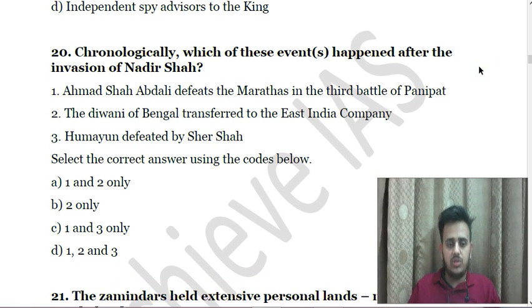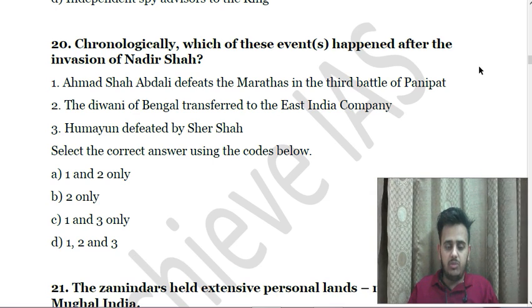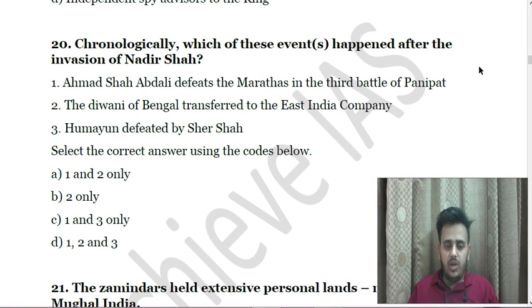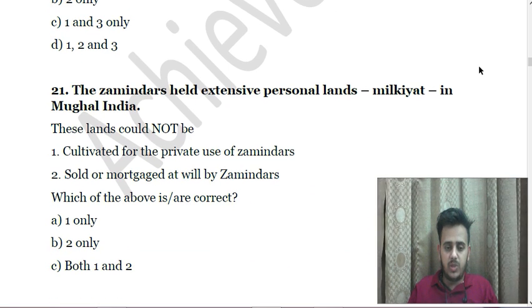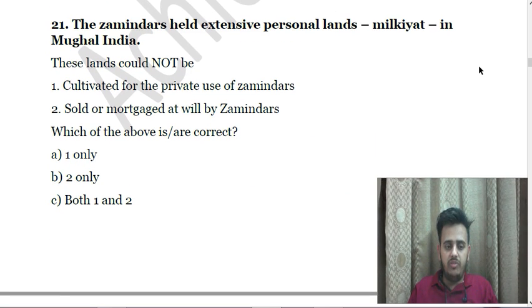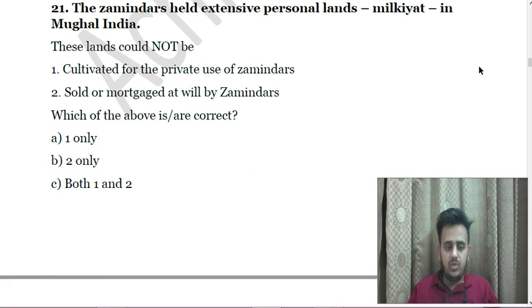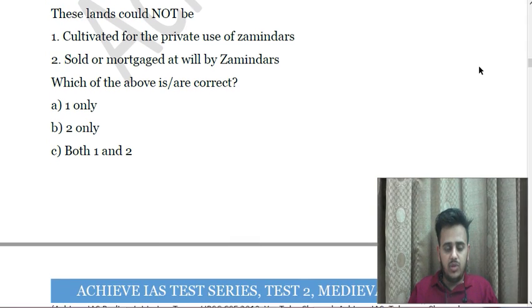Next: Which of these events happened after the invasion of Nadir Shah? First, Ahmed Shah Abdali defeats the Marathas in the Third Battle of Panipat. Second, the Diwani of Bengal transferred to the East India Company. Third, Humayun defeated by Sher Shah. Choose the correct answer. Next: The zamindars held extensive personal lands called Milkiyat in Mughal India. These lands could not be — First, cultivated for the private use of zamindars; Second, sold or mortgaged at will by zamindars.